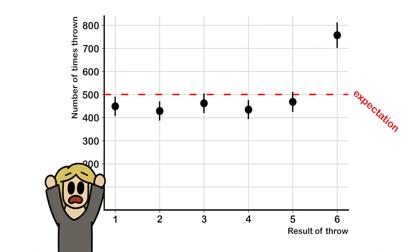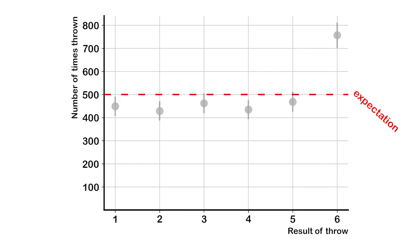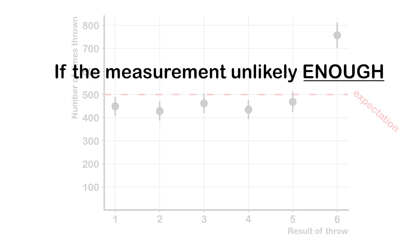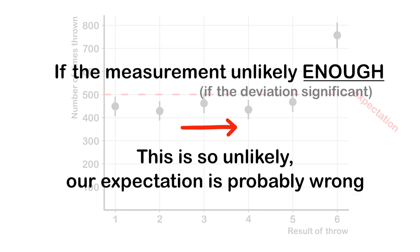And that's the only thing we can do. We can only try to determine how likely the result we measured is under the assumption that our expectation is true. If the result is unlikely enough, or in science speak, if the deviation from the expectation is significant enough, then we say, well, this is so unlikely, our expectation is very likely wrong.